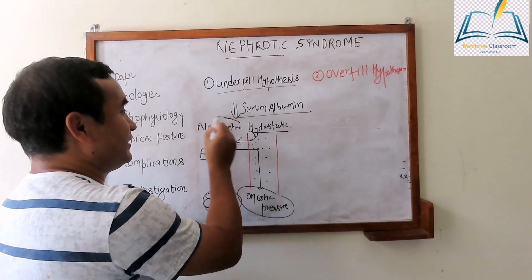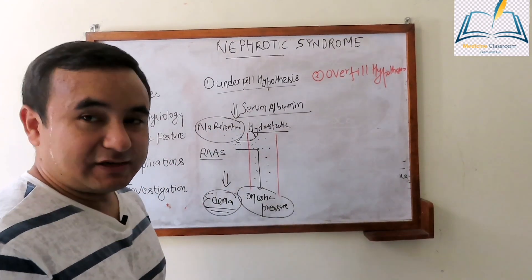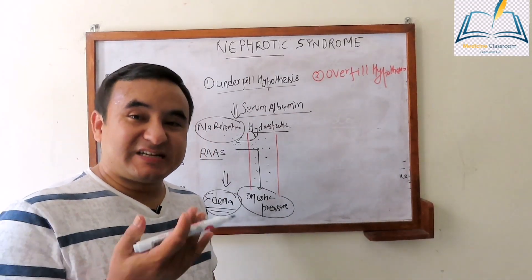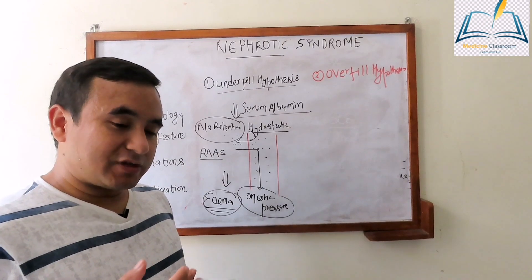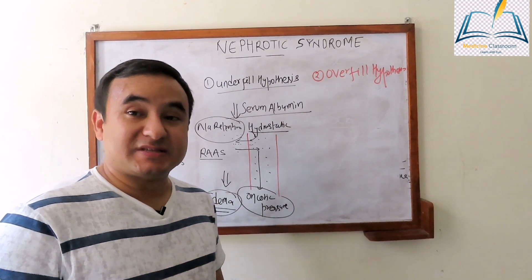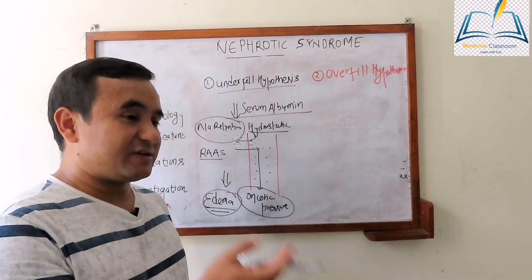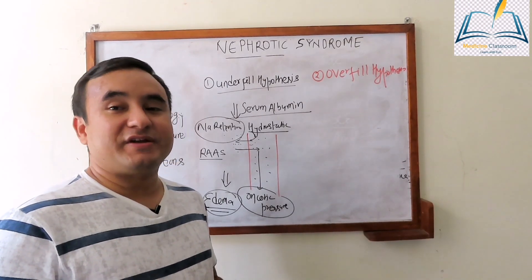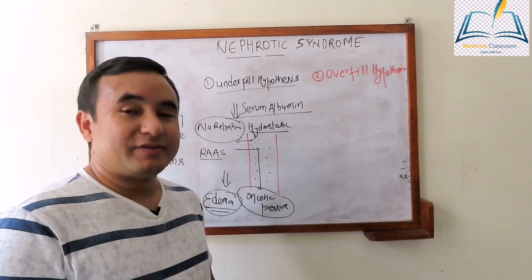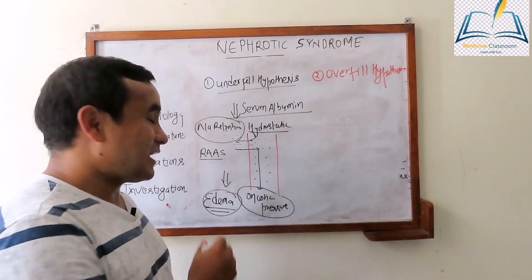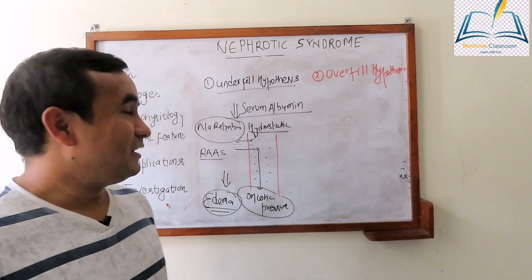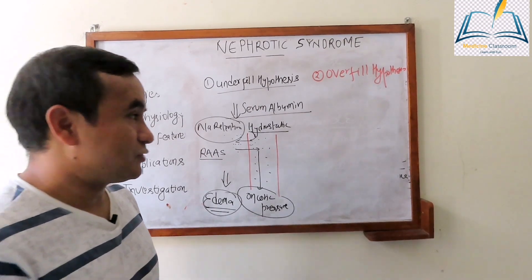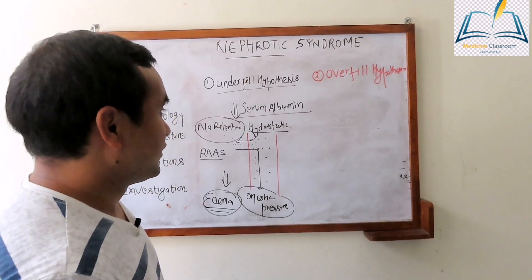So, in the underfill hypothesis, the main problem is a low level of albumin which decreases oncotic pressure, so fluid escapes from intravascular space to the interstitial space. There is depletion in intravascular volume, the RAAS system gets activated, and it ultimately leads to sodium retention. This is one of the pathophysiologies of nephrotic syndrome.